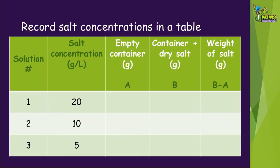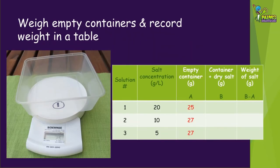Okay, how did you go? We diluted solution one with an equal amount of water, making solution two half the concentration of solution one, so it's 10 grams per litre. Solution three is half the concentration of solution two, so it's 5 grams per litre.